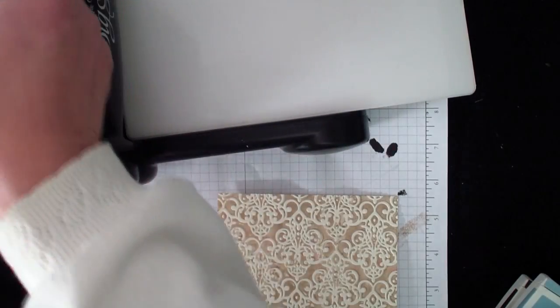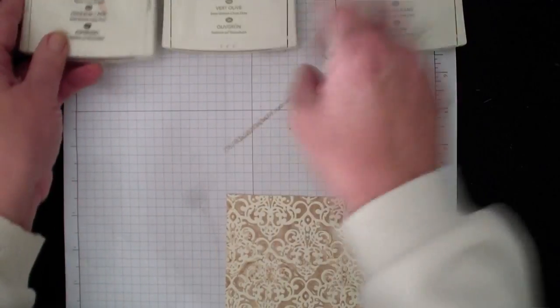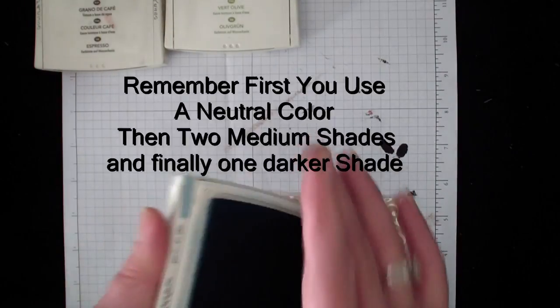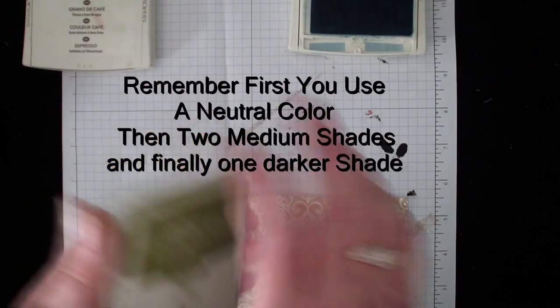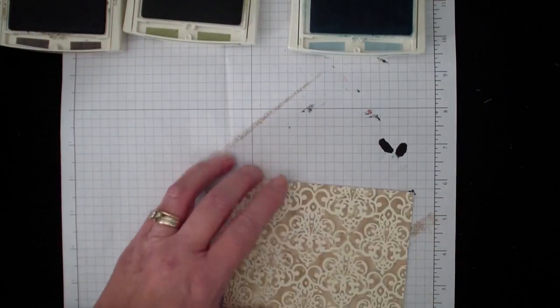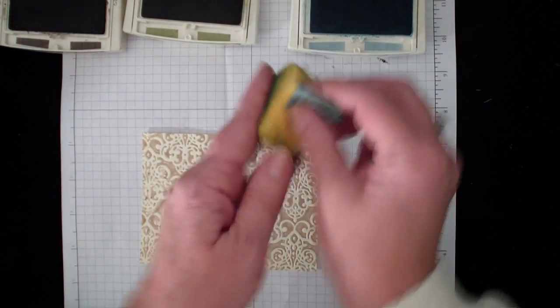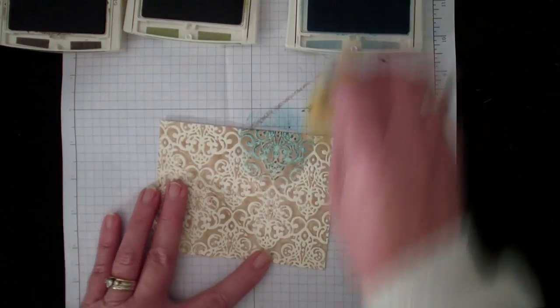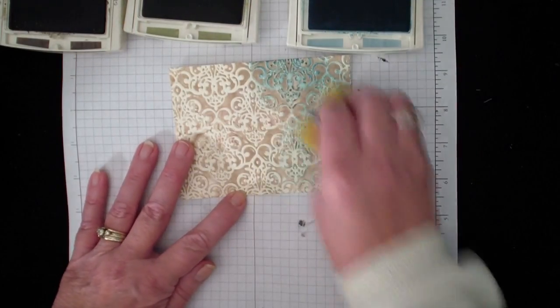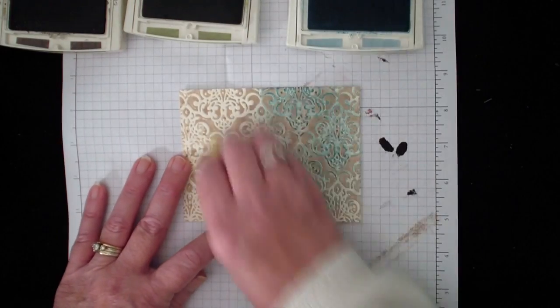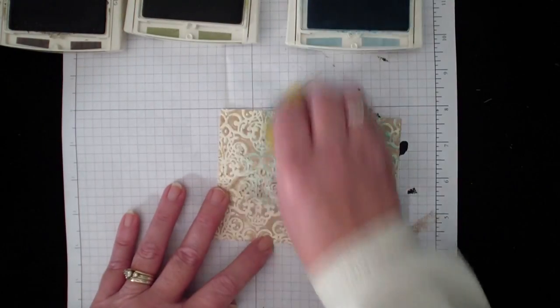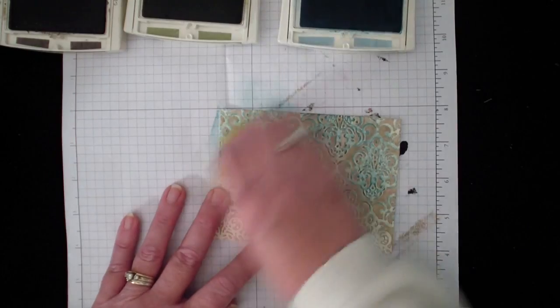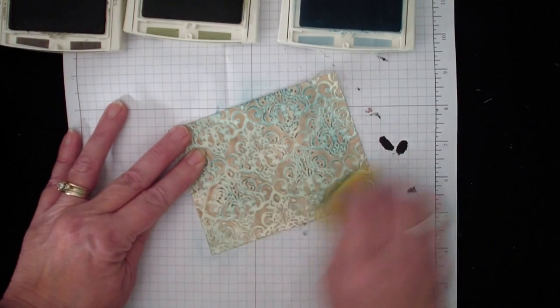But now we're going to do the patina. We're going to come in with our colors. Again, like I said, I'm going to use my blue Baja Breeze, Old Olive, and Early Espresso. I'm going to take my sponge into my Baja Breeze and I'm going to rub on top of the raised image, or the part that is left still being vanilla. So I want to add the blue.